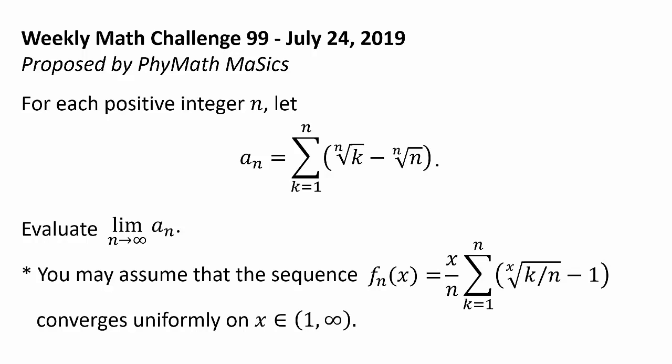First, you may assume that the sequence f sub n of x, defined by x over n times the summation from k equals 1 to n of x root of k over n minus 1, converges uniformly on the interval from 1 to infinity.